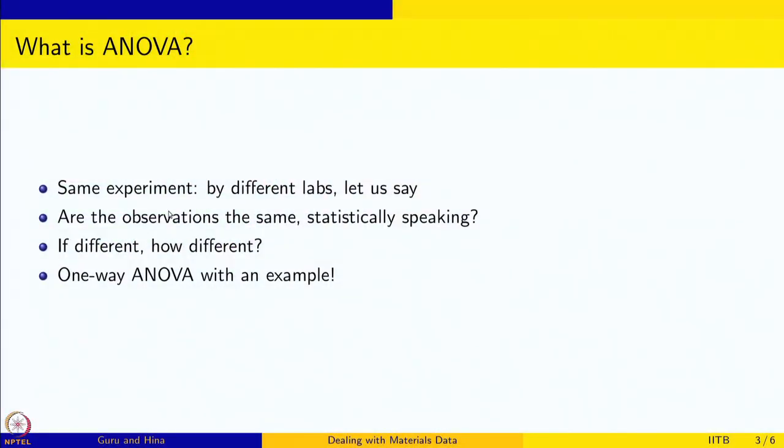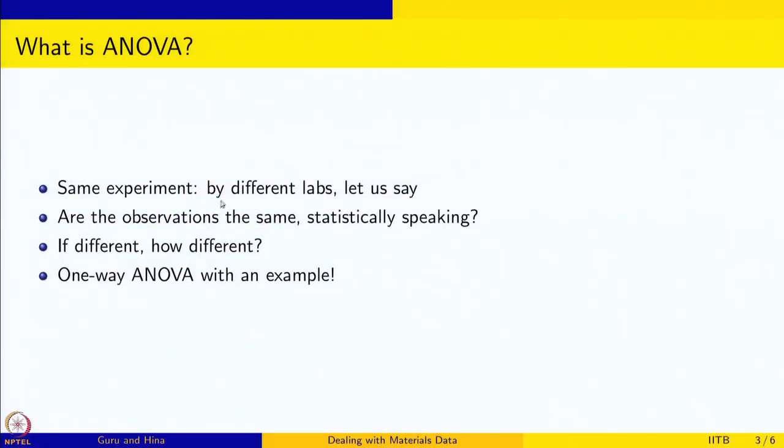What is ANOVA? If you do some experiment, let's say the same experiment by three different labs and each lab does it more than once, they will have their own mean value for the experiment and different labs will give you different means. What we are testing is whether these observations are the same statistically speaking, or if the differences between the different labs is statistically significant and if they are different, how different. This is done using one-way ANOVA and I will show you how to do it using R.